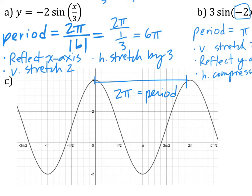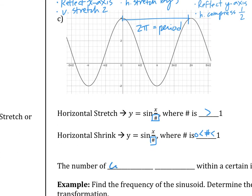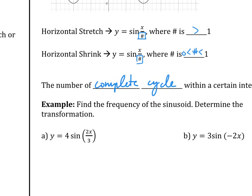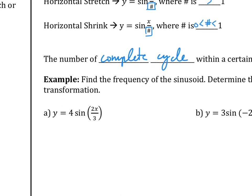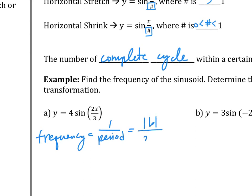Next part: frequency. Frequency means the number of complete cycles within a certain interval. Frequency is 1 over period. Period was 2π over B, so frequency is the reciprocal: absolute value of B over 2π.